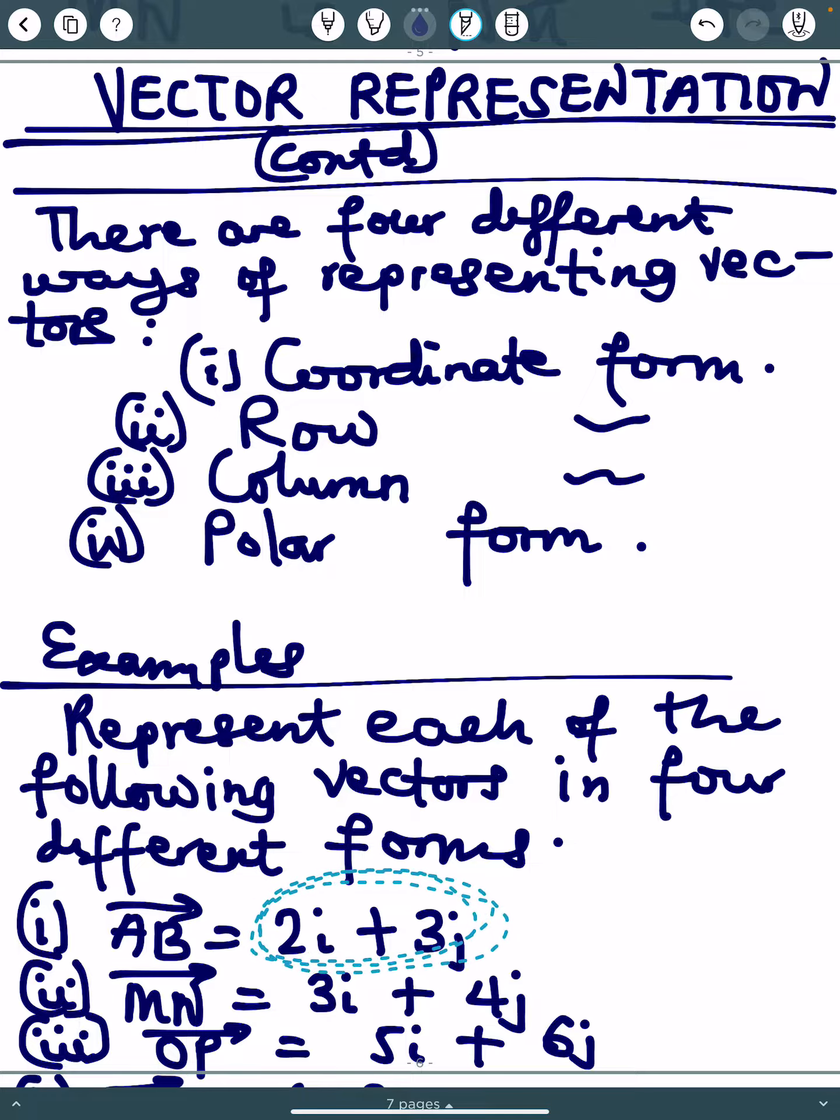Therefore, there are three other ways of representing this same vector. The four different ways of representing vectors are: coordinate form, row form, column form, and polar form.